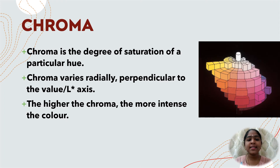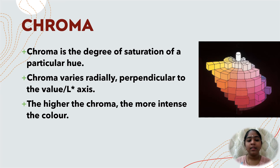Chroma is the degree of saturation of a particular hue. Chroma varies radially perpendicular to the value axis. The higher the chroma, the more intense the color. Chroma is not considered separately in dentistry — it is always associated with the hue and value of dental tissues, restorations, and prosthesis.